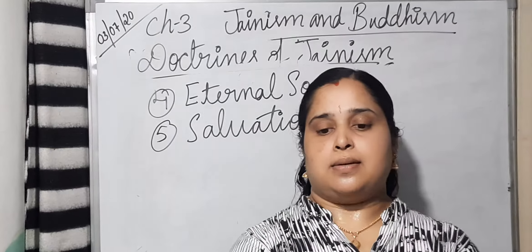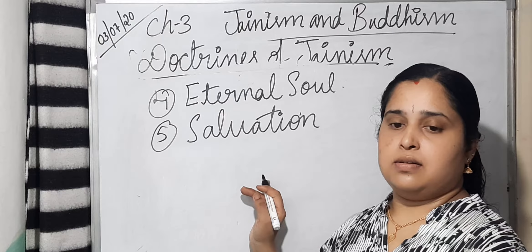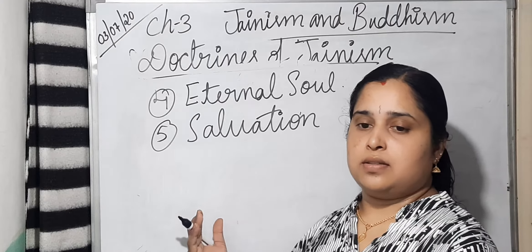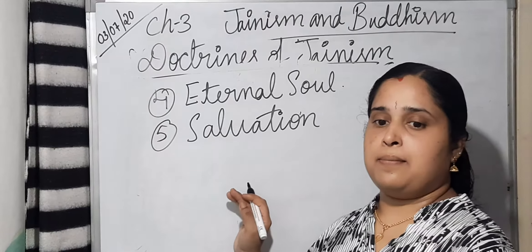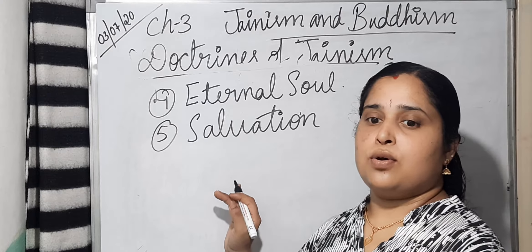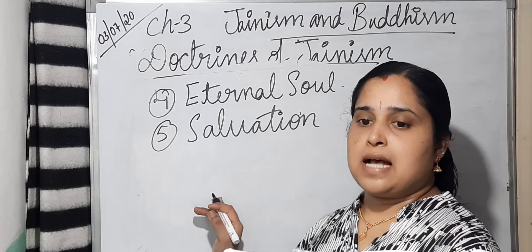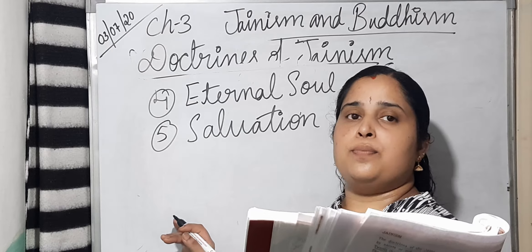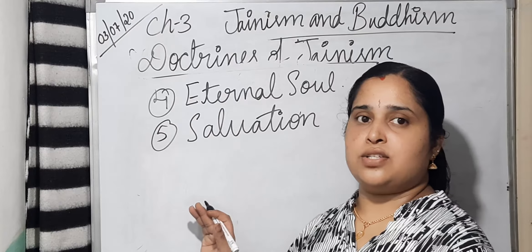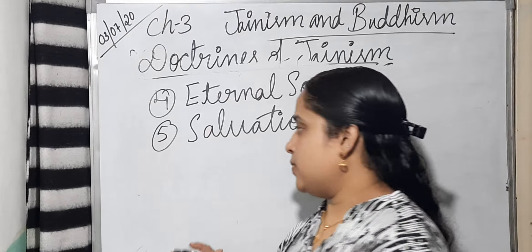The fifth doctrine is Salvation. Like Hinduism, Jains also believed in Moksha, or salvation — freedom from the cycle of birth and rebirth. This can be achieved only by leading an austere life based on non-violence and self-denial. To attain salvation, it is necessary to practice the Three Ratnas of right faith, right knowledge, and right action.